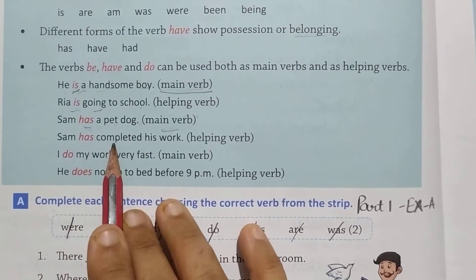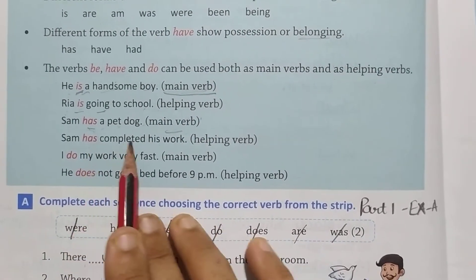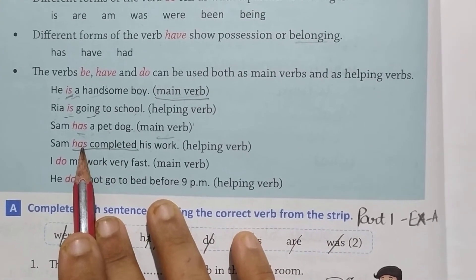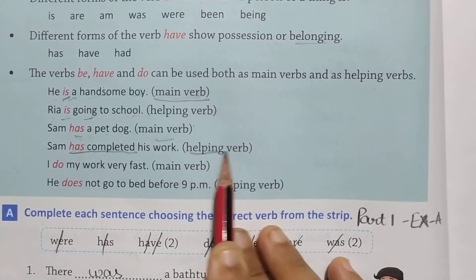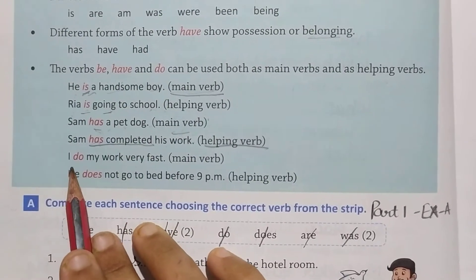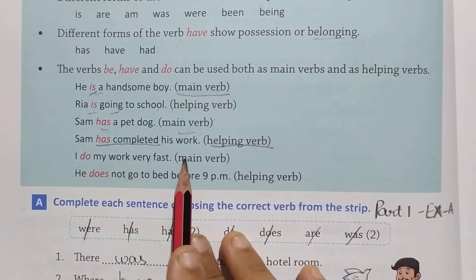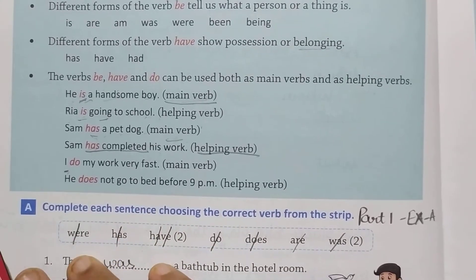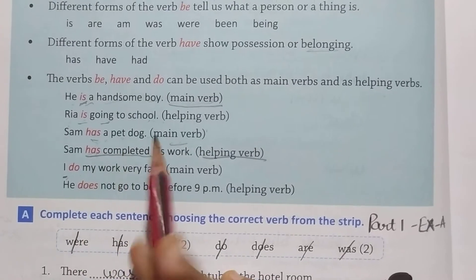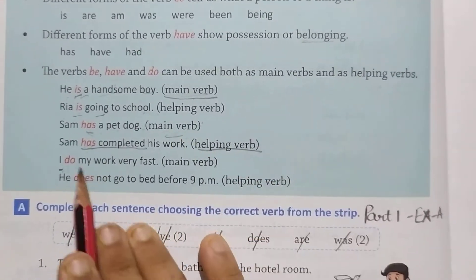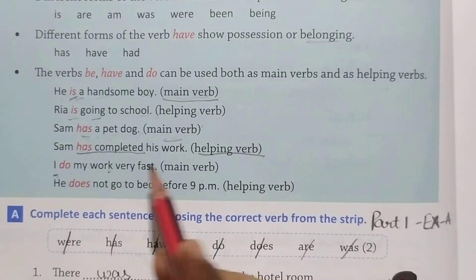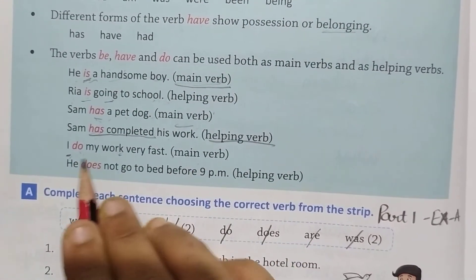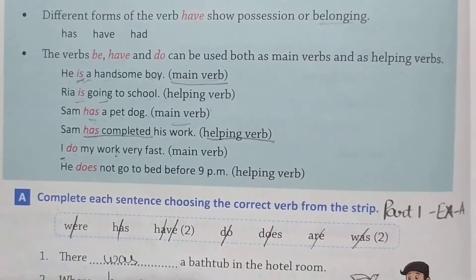'Sam has completed his work' — yahan 'has completed' verb hain. Sam ne complete kiya, aur 'completed' ko help karne ke liye 'has' use hua hain, so yahan 'has' is our helping verb. 'I do my work very fast' — yahan 'do' main verb hain, kyunki 'do' action bata raha hain — main karta hoon, maine kiya.